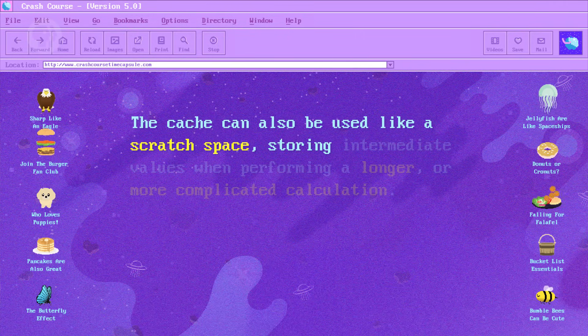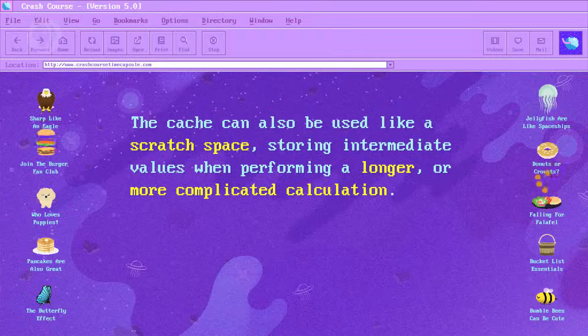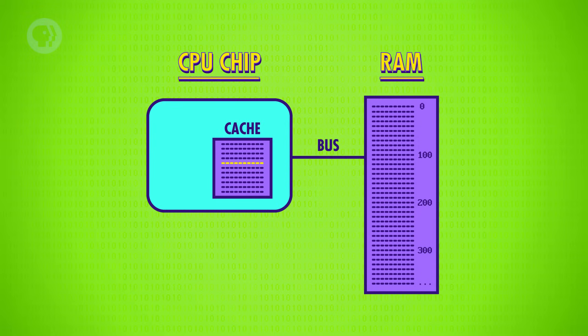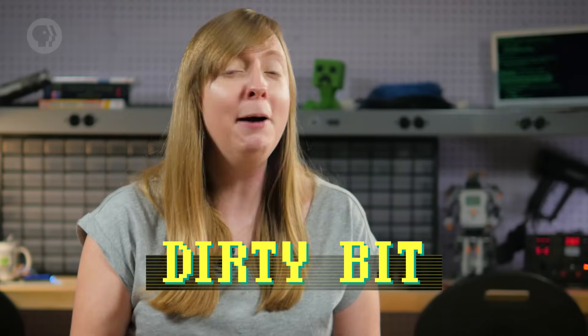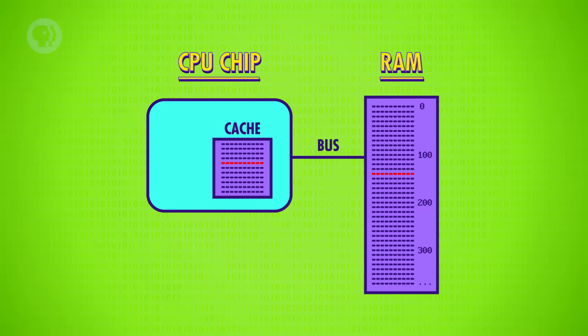The cache can also be used like a scratch space, storing intermediate values when performing a longer or more complicated calculation. Continuing our restaurant example, let's say the processor has finished totaling all the sales for the day and wants to store the result in memory address 150. Instead of going back to RAM to save that value, it can be stored in the cache copy, which is faster to save to and faster to access later if more calculations are needed. But this introduces an interesting problem: the cache's copy of data is now different from the real version stored in RAM. This mismatch has to be recorded, so the cache has a special flag for each block of memory it stores called the dirty bit. Most often, synchronization happens when the cache is full and a new block of memory is being requested. Before the cache erases the old block to free up space, it checks the dirty bit, and if it's dirty, the old block is written back to RAM before loading in the new block.